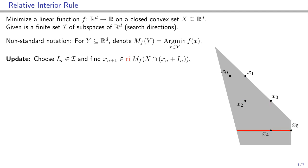Points like x_1 or x_5 have the property that f cannot be improved by moving from them along any single subspace. We call such points local minima.